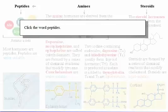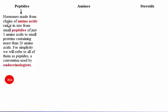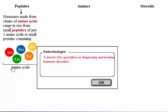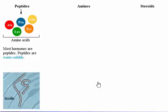Hormones made from chains of amino acids range in size from small peptides of just three amino acids to small proteins containing more than 20 amino acids. For simplicity, we will refer to all of them as peptides, a convention used by endocrinologists. Most hormones are peptides. They are water-soluble. We will study synthesis of the peptide insulin in detail in the next pages.